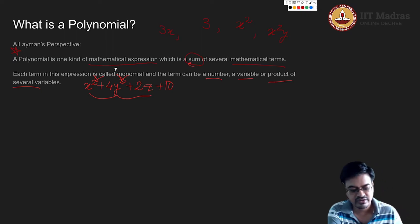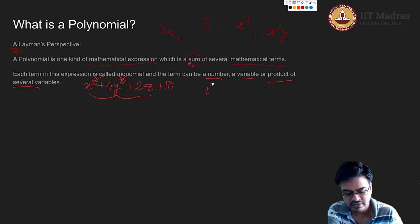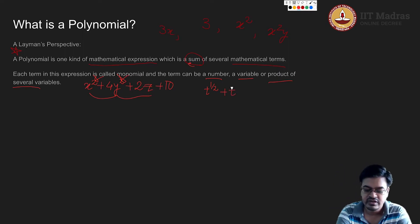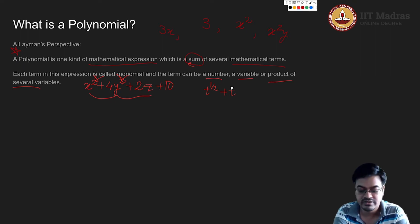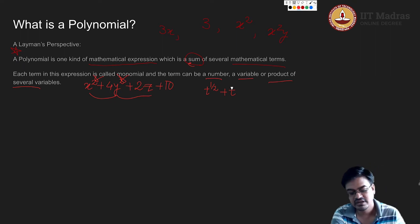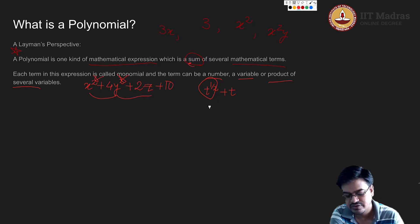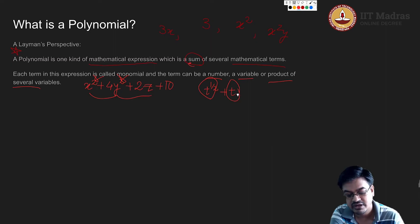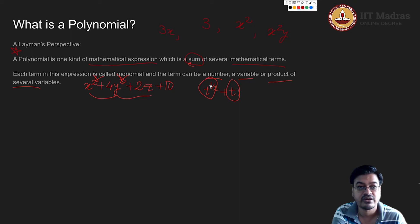Suppose I write an expression of the form t raised to half plus t. A layman would say this can be a polynomial, because t raised to half, if you square this number you get t. So this is one variable, this is another variable and therefore, according to the layman, we are actually having a polynomial.